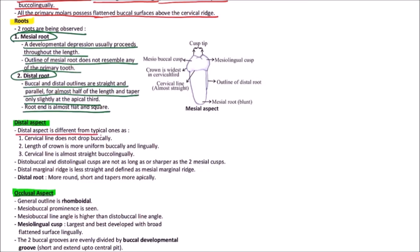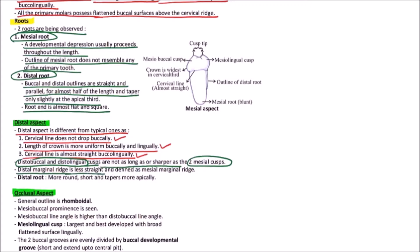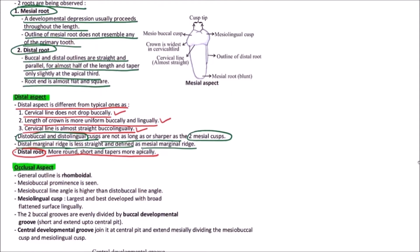Now the distal aspect. It differs from typical aspects as the cervical line does not drop buccally. The crown length is more uniform buccolingually and the cervical line is almost straight buccolingually. The distal cusps — the distobuccal and distolingual — are not as long or sharp as the two mesial cusps. The distal marginal ridge is less defined compared to the mesial marginal ridge. The distal root is more round, short, and tapers more apically.